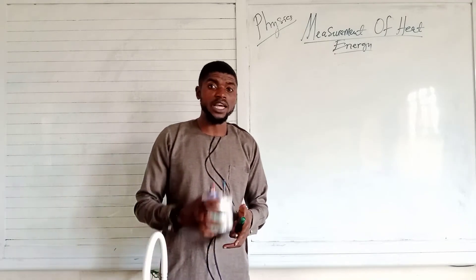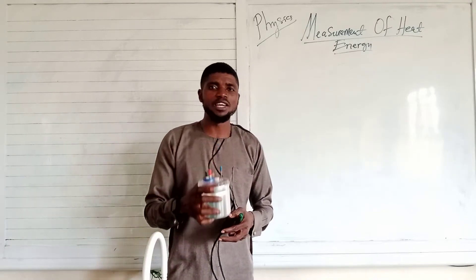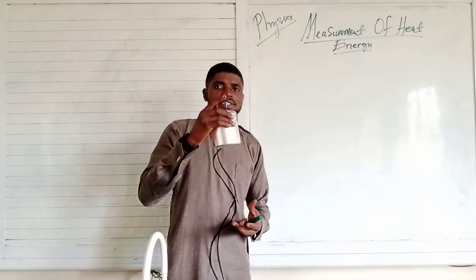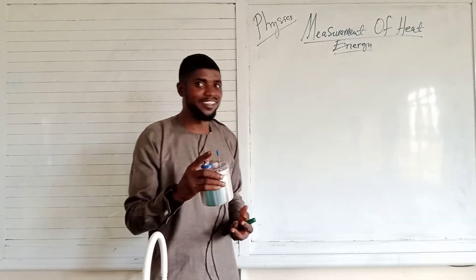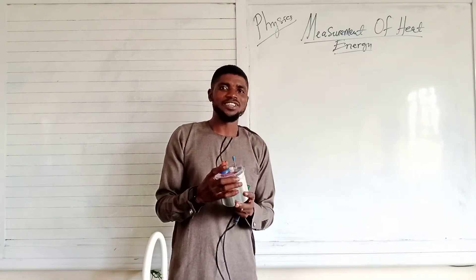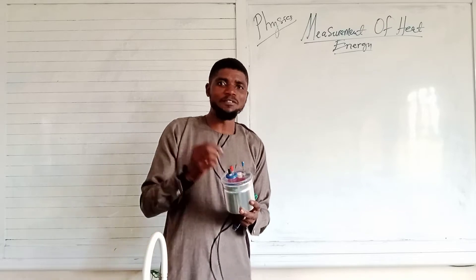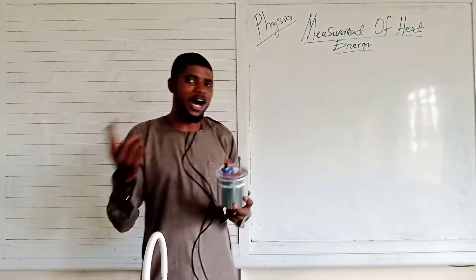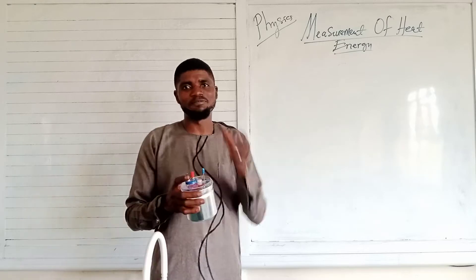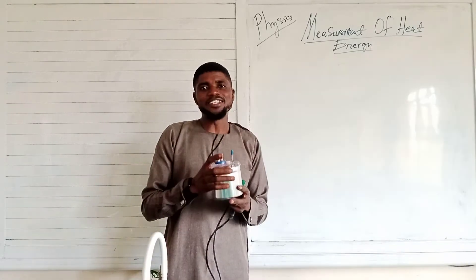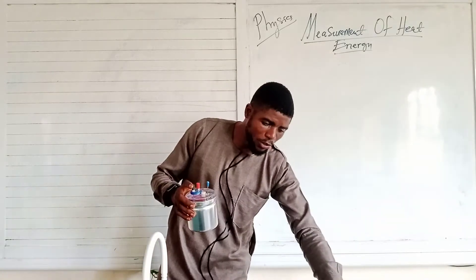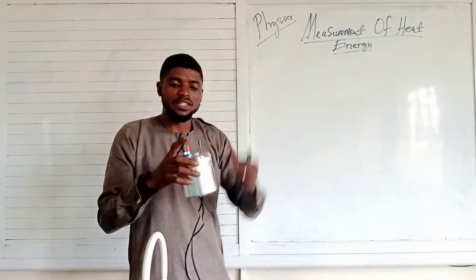A calorimeter is a closed system in physics. What do we mean by a closed system? A system that is very stingy — a system that cannot allow anything to come in or anything to go out. A very selfish system. A system that will not allow heat to come in or heat energy to go out. That is what we call the calorimeter.